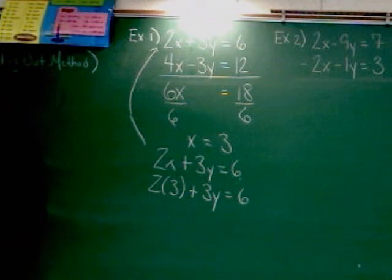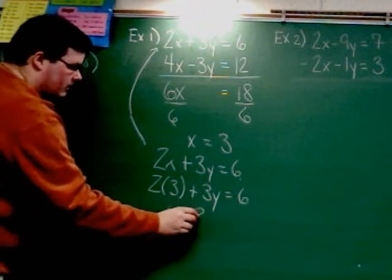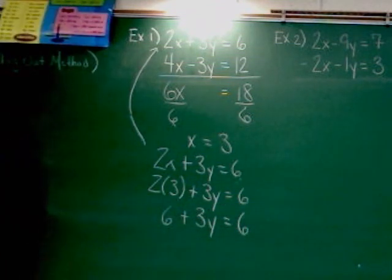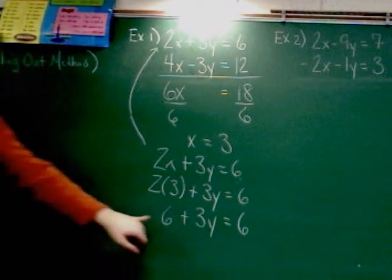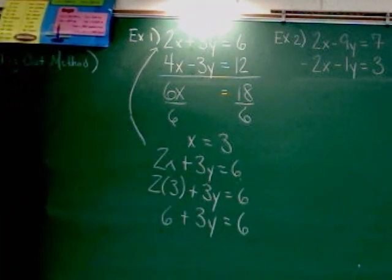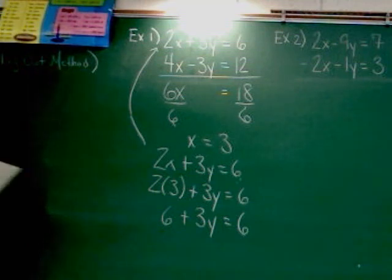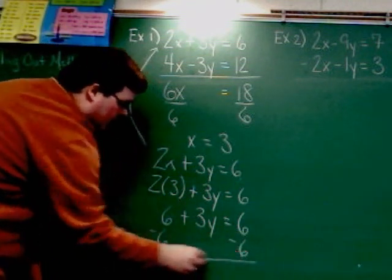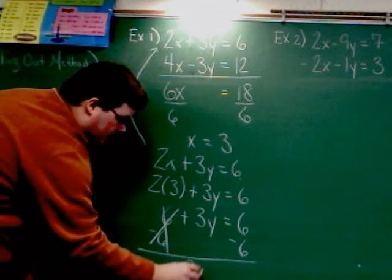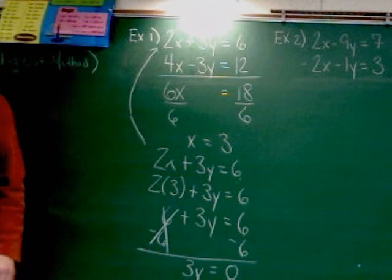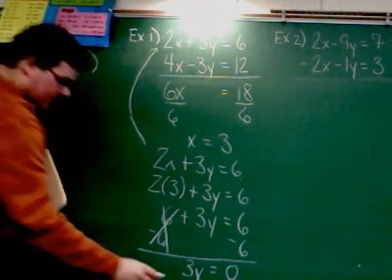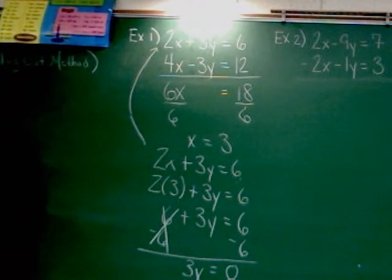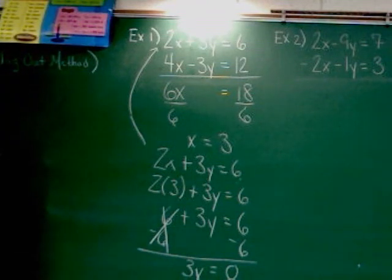We can simplify that because I've got two times three there. That's just going to make six. So I've got six plus three Y equals six. Now, you know I want variables on the left, I want lonesome numbers to go to the right, which means this six has got to travel over there. So to do that, I'm going to have to subtract it from both sides. When I do that, I get three Y equals zero. We know that three times zero makes zero, so Y must be zero. You could divide by three and you'd get the same thing.